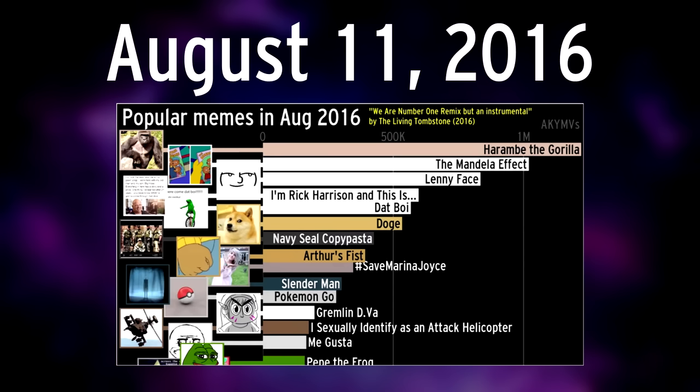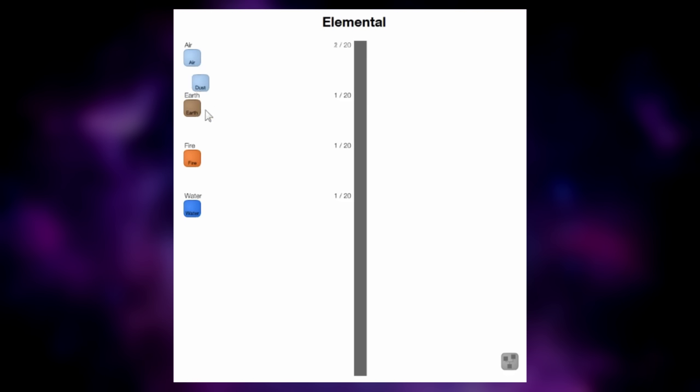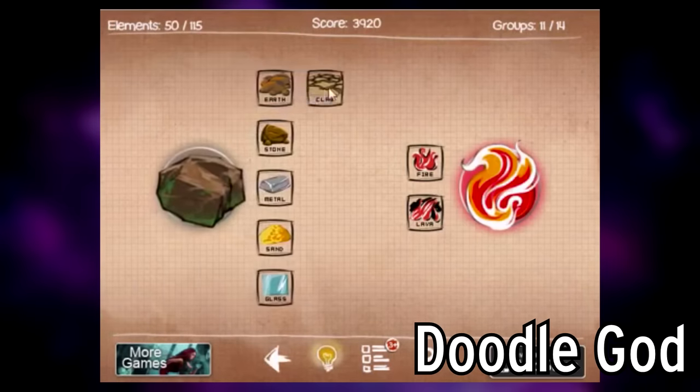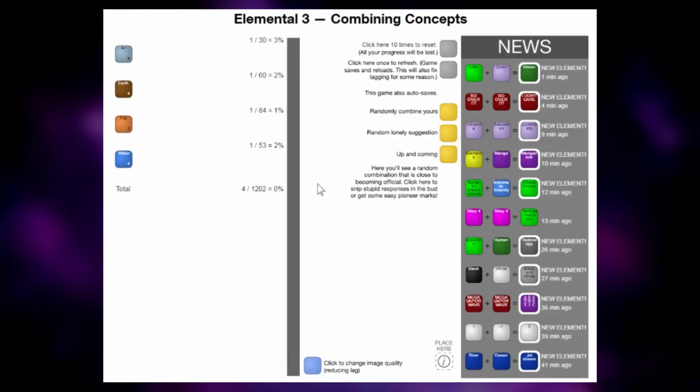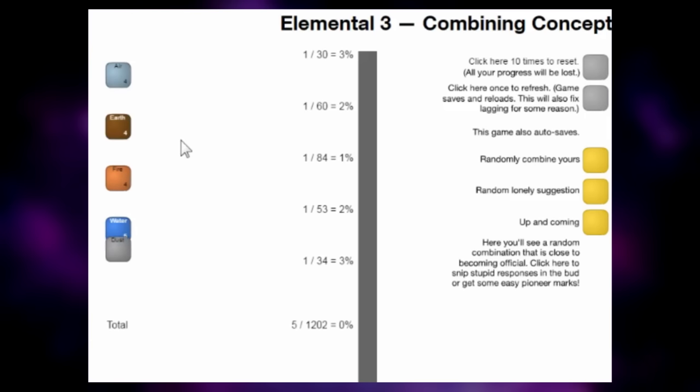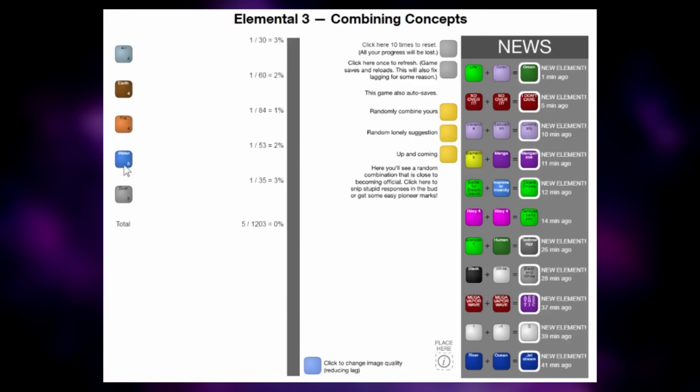Elemental 3 is a game I released to the public on August 11th, 2016, over 4 years ago. The idea, heavily inspired by the popular iOS app Doodle God, is that you start with the 4 basic elements of air, earth, fire, and water, and combine pairs of them to create new elements, and combine pairs of those new elements to create even more elements.